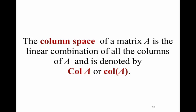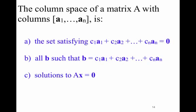The column space is a type of space as well. The column space of a matrix A is the set of all linear combinations of the columns of A, denoted Col(A). Here's a clicker question: the column space of a matrix A with columns A₁ to Aₙ is — (A) a linear combination of the columns that equals zero? (B) all B's such that B is a linear combination of the columns of A? Or (C) the solutions to AX = 0? Think about that and come up with the answer.